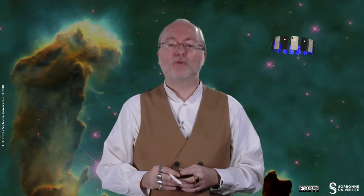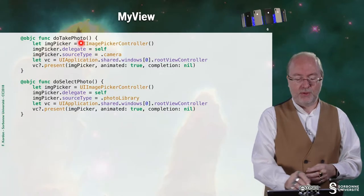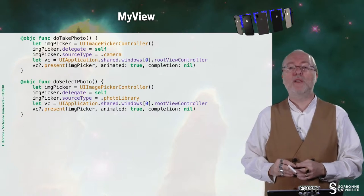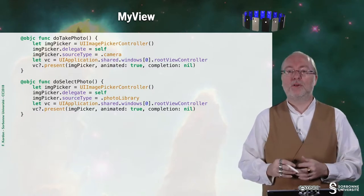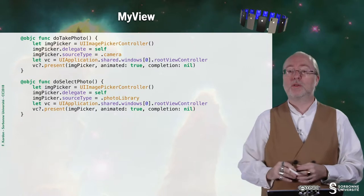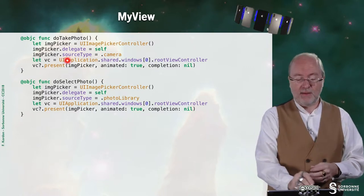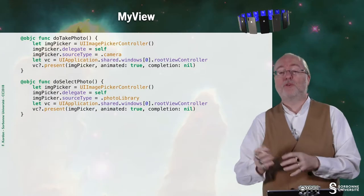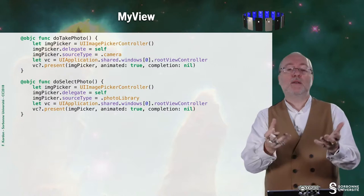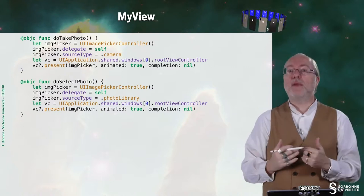Let's have a look at the take photo action. Here I am creating my image picker, which is a UIImagePickerController. I set the delegate to myself because I will handle the protocol. I set the source to be the camera, and then I find a view controller to present my controller. There is nothing to do after completion, and everything is handled by the protocol — either I click cancel and go somewhere else, or I click on a picture and it works.